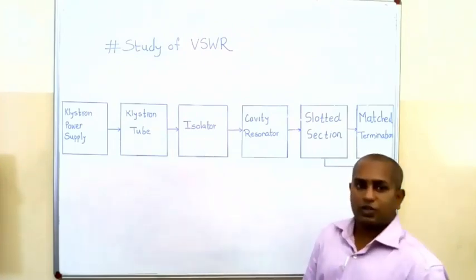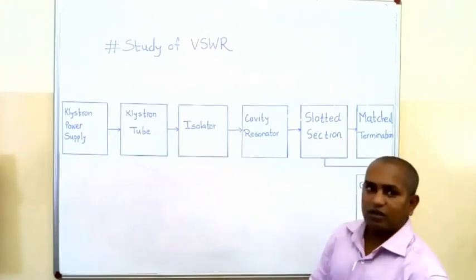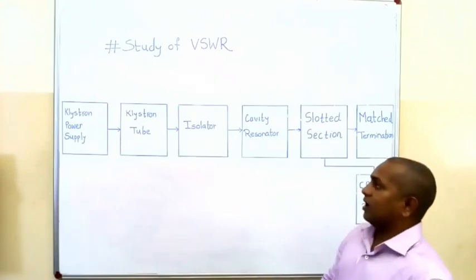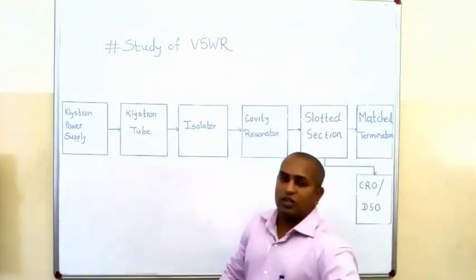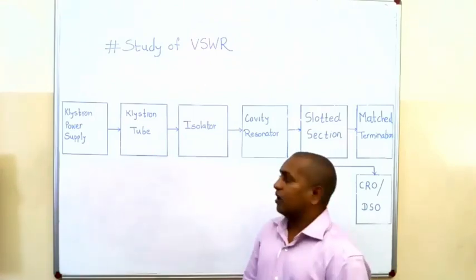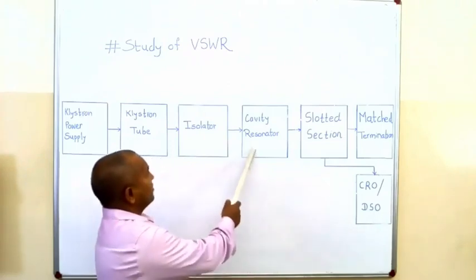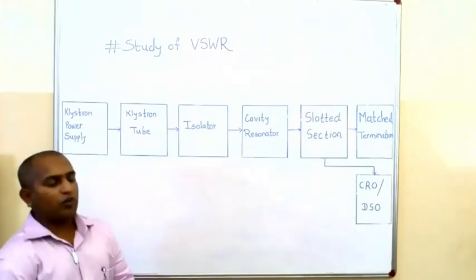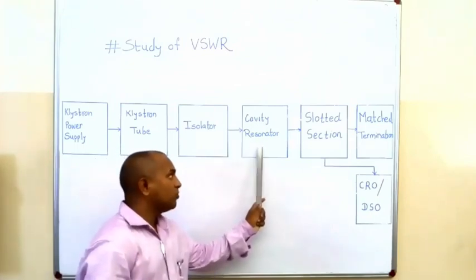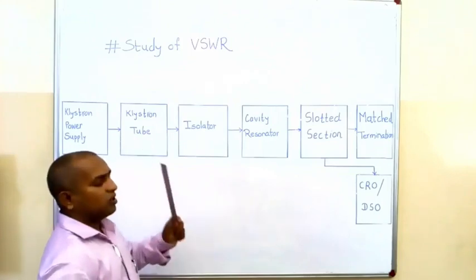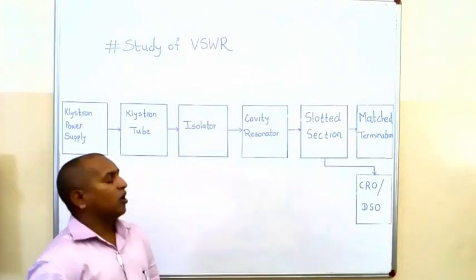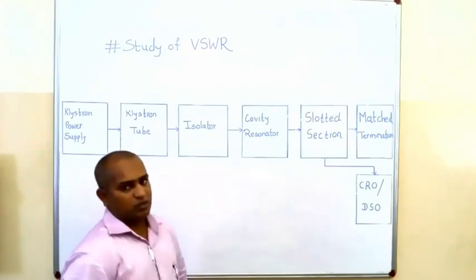The third block is an isolator. The isolator avoids the reflected signal from the output side and keeps the stability of the operating frequency. Our next block is a cavity resonator, used to measure the operating frequency of our Reflex Klystron. That is why this cavity resonator is also known as a Microwave Frequency Meter.